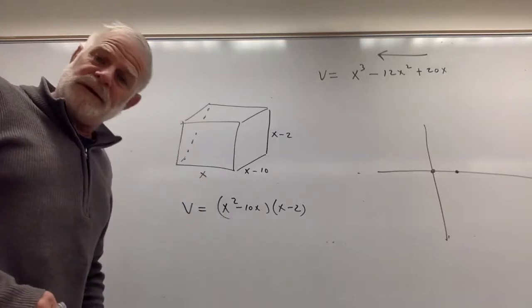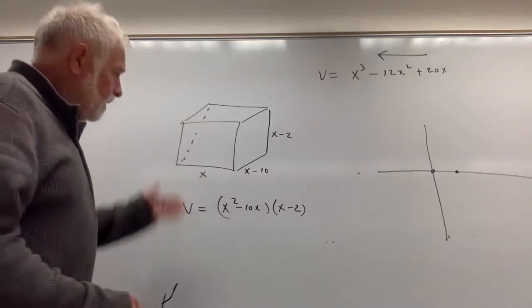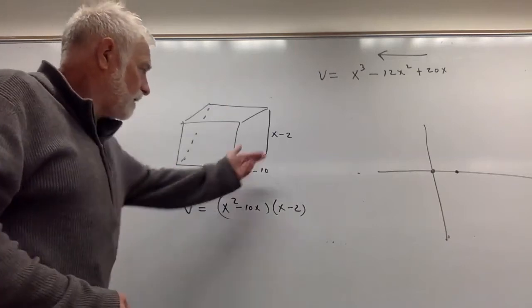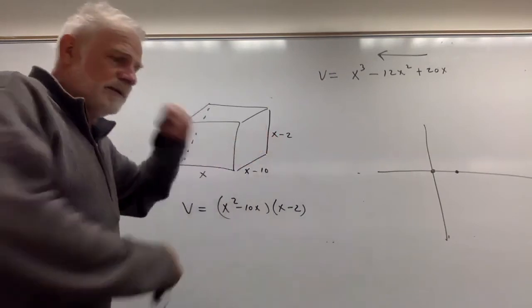So here's a cubic - forgive my art history, I stopped studying art in the third grade - but the side lengths, length, width, and height are as follows: x, x minus 10, x minus 2.